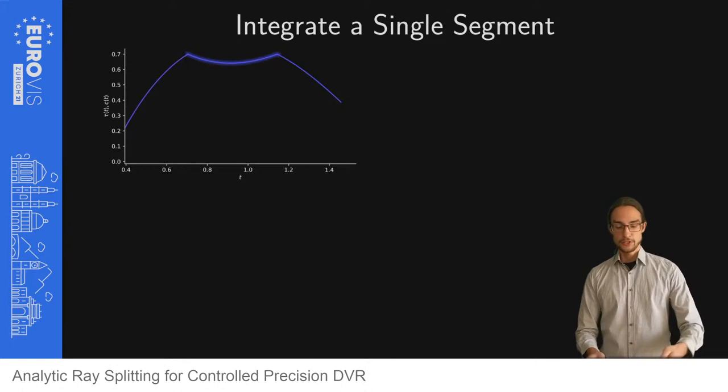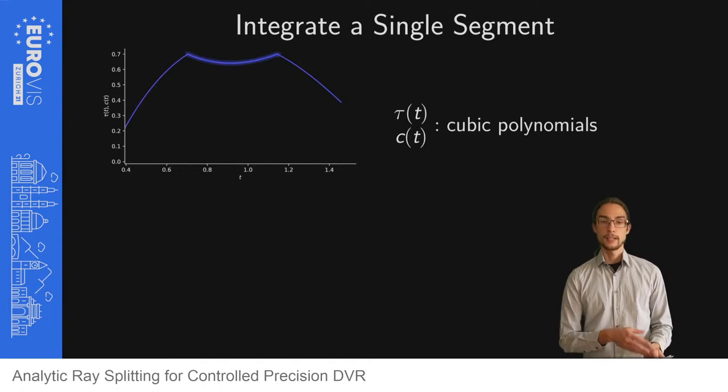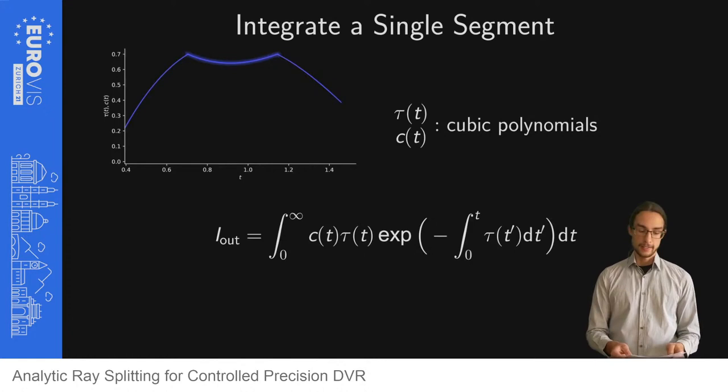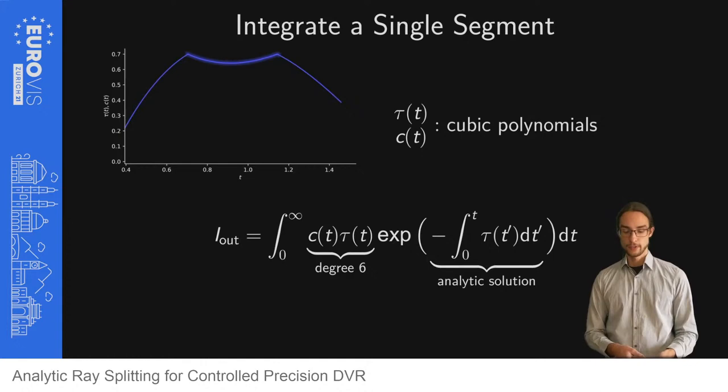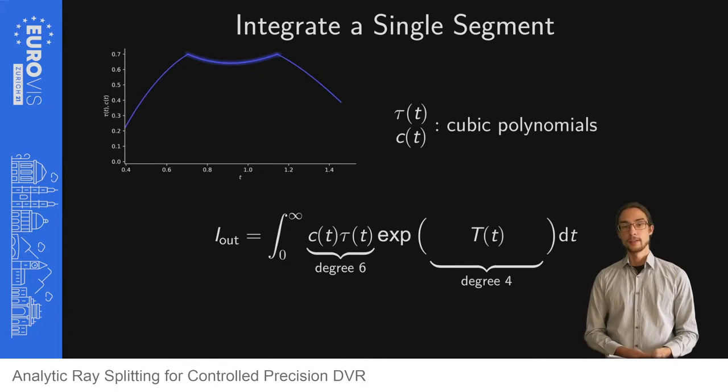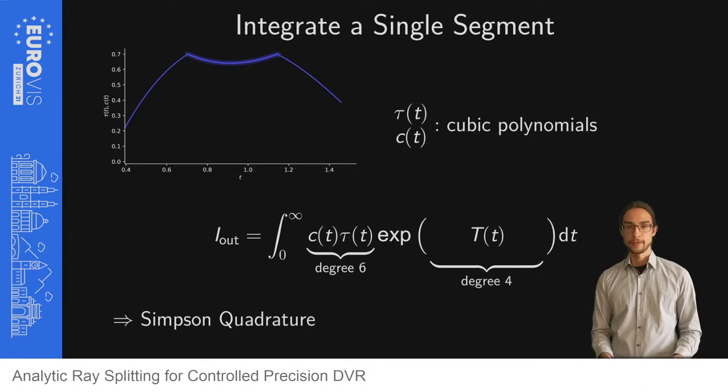Each segment of the ray is integrated individually. Per segment, the color and absorption are single cubic polynomials. We can then apply the quadrature method presented by Novenson. First the volume rendering integral is simplified. The inner integral can be solved analytically, giving rise to a polynomial of degree 4. The outer integral has to be solved via Simpson quadrature. A detailed study on the quadrature methods is shown later.